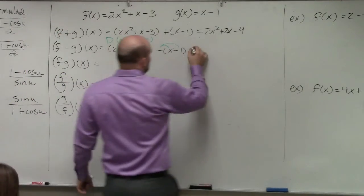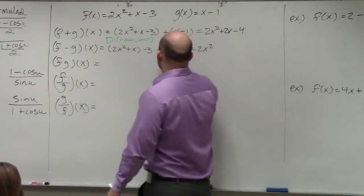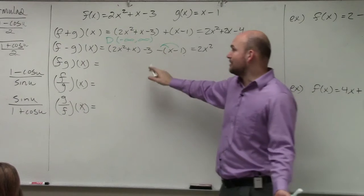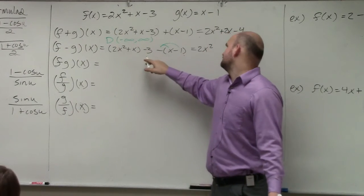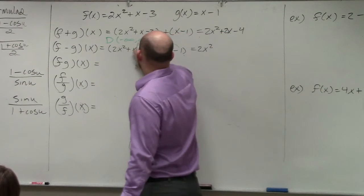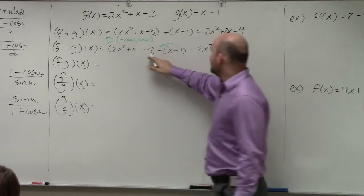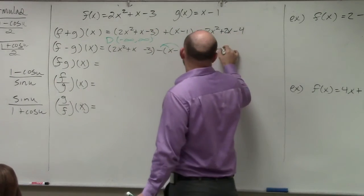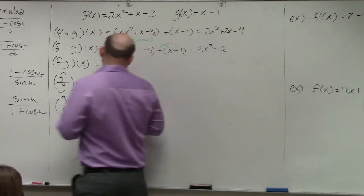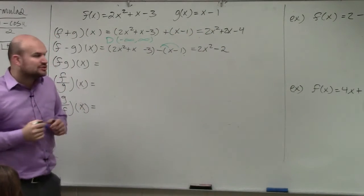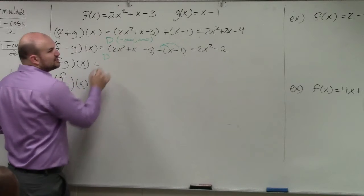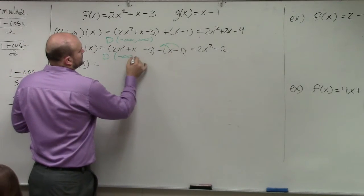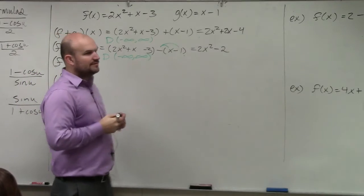So therefore, my function turns into 2x squared. x minus x is just going to be 0x, which is 0. And then negative 3 minus a negative 1 is going to equal a negative 2. Again, we look at our restrictions. Do we have any restrictions going on? No.